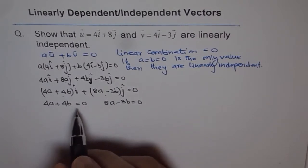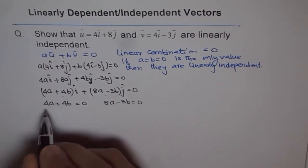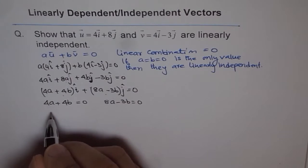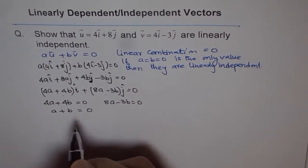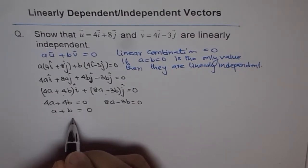So from here we can solve. We can divide by 4 and we get a plus b equals 0. Now that means a equals minus b.